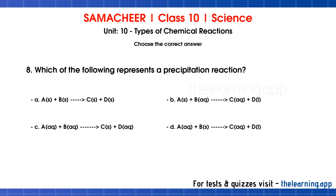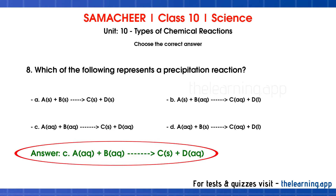Eighth question: Which of the following represents a precipitation reaction? A precipitation reaction involves 2 aqueous solutions combining to give 1 insoluble salt and 1 soluble compound. Option C matches this format — two aqueous solutions combine to form an insoluble salt plus a soluble compound. Correct answer is option C.